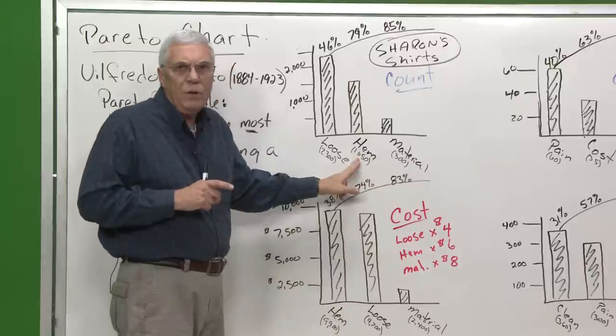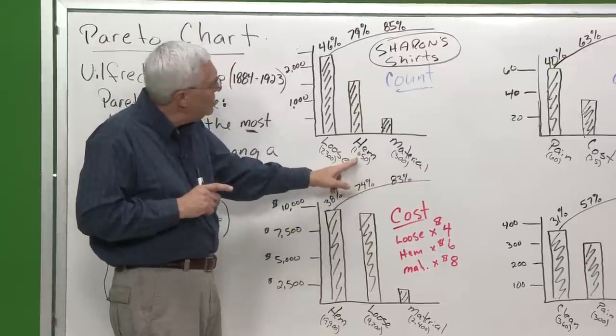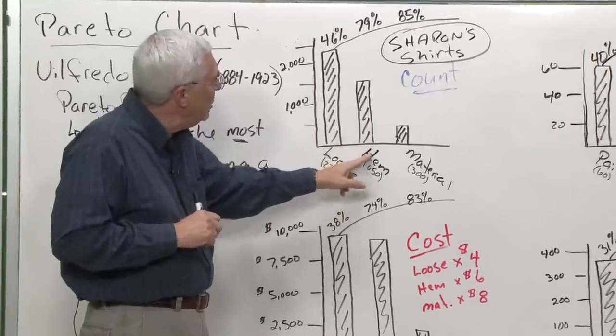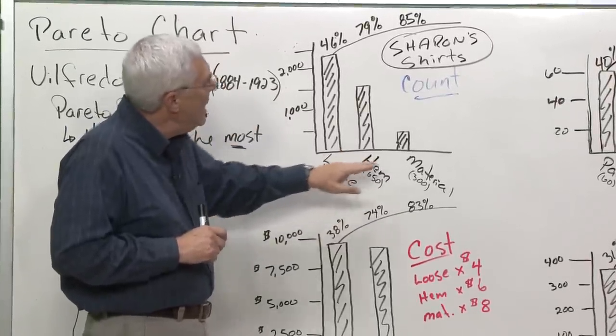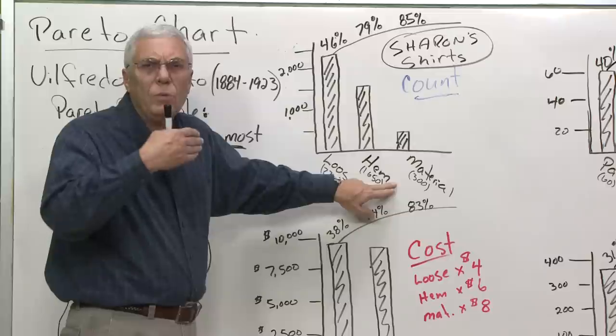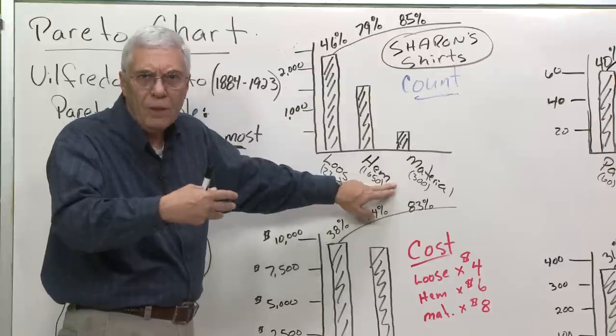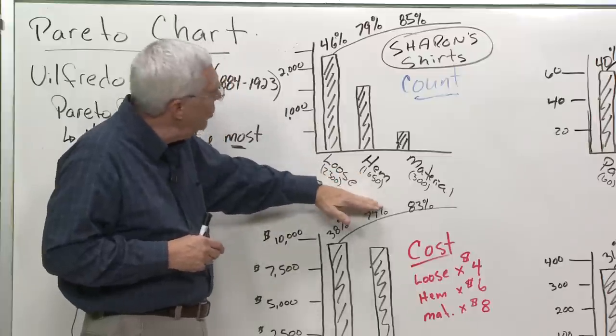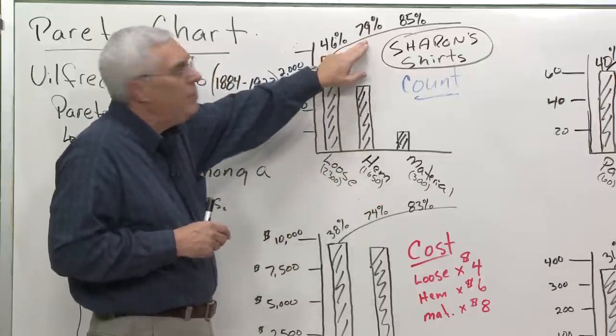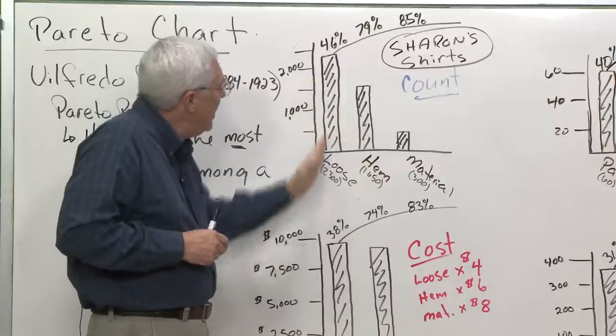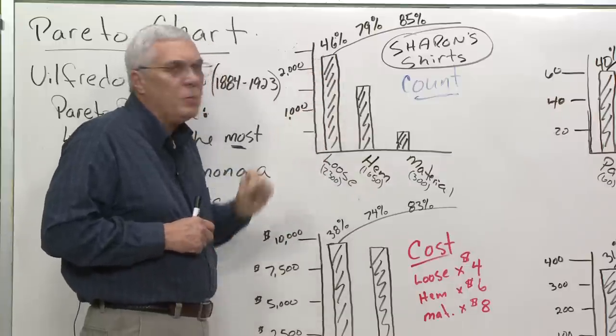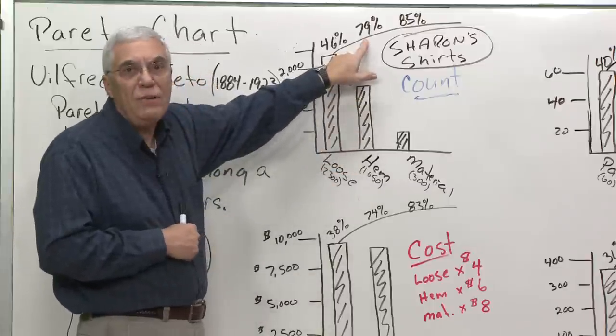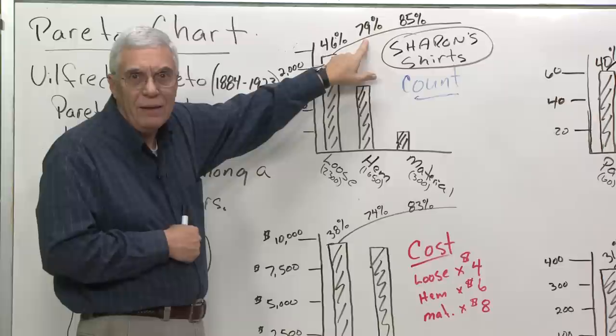Now here's where it gets just a little bit tricky. Over here, I'm not going to divide the 1650 by the total. I'm going to combine the two. So this category then is the total of the loose threads and the hems. It's what we call a cumulative total. So now the total of these two together divided by the total number tells me that's 79%. So this category generates 46% of all my defects. These two together account for 79% of all my defects.